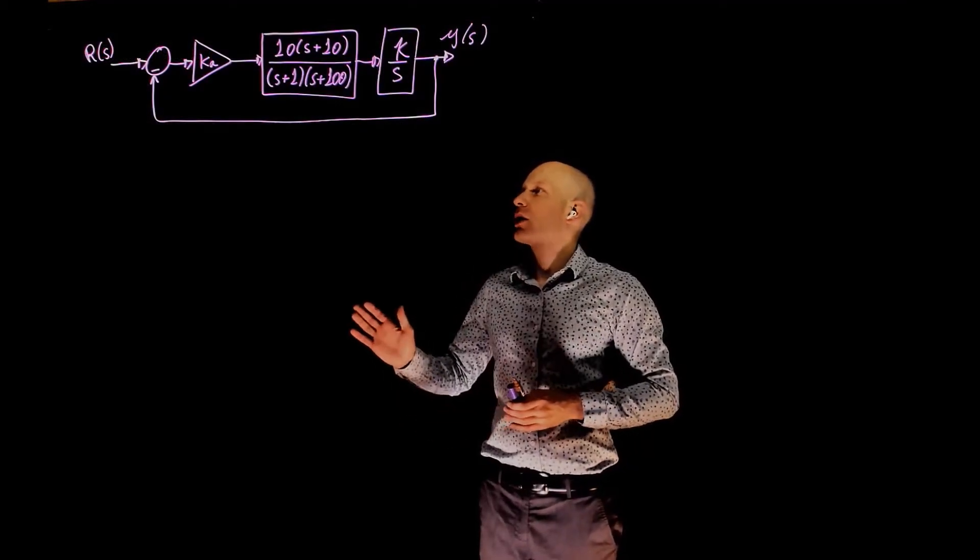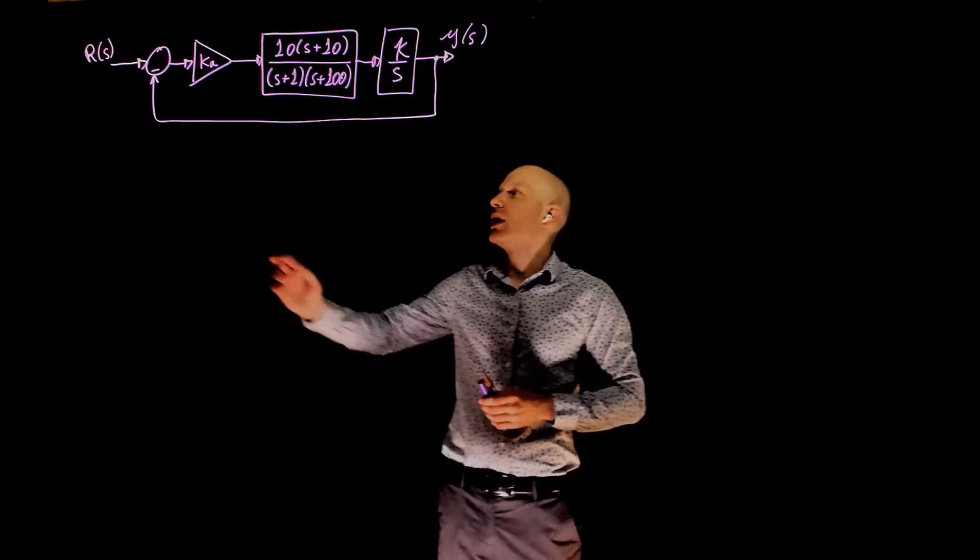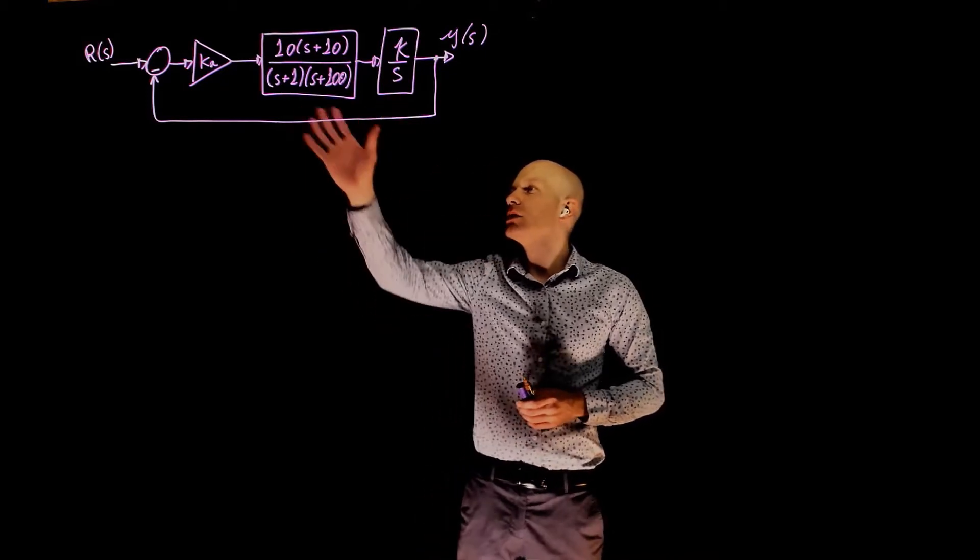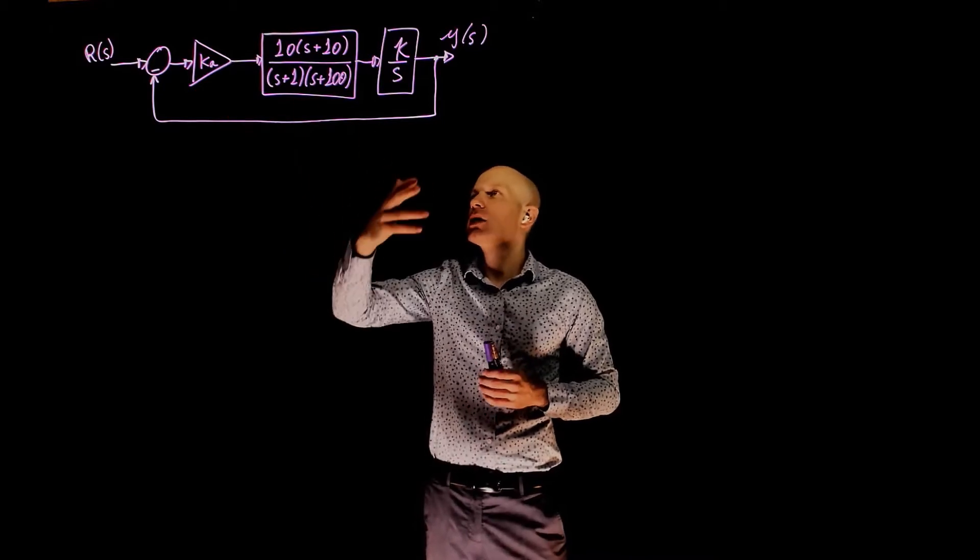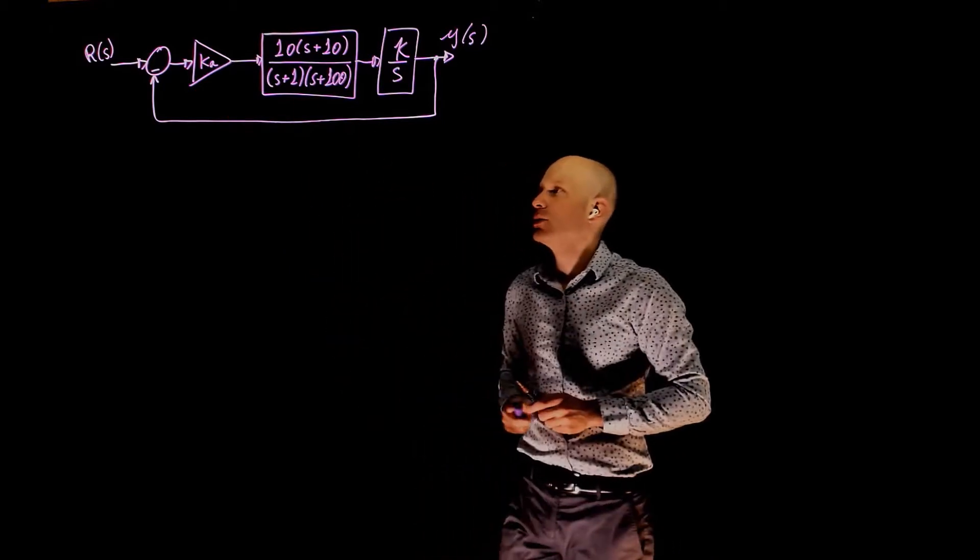In this example we have another feedback control system with two gains, ka and k, and this is the plant you are trying to control. The question is, determine the maximum gain ka times k that leads to a stable system.